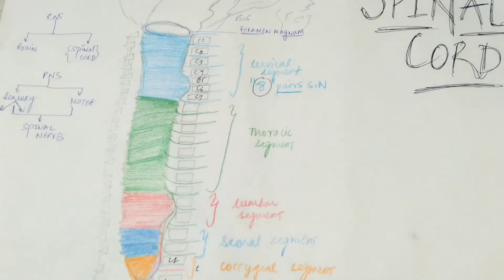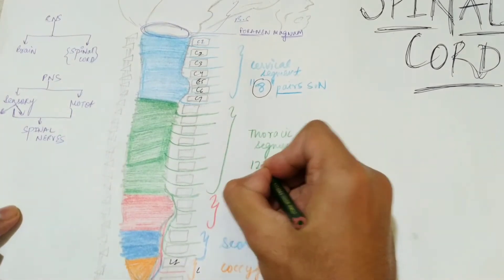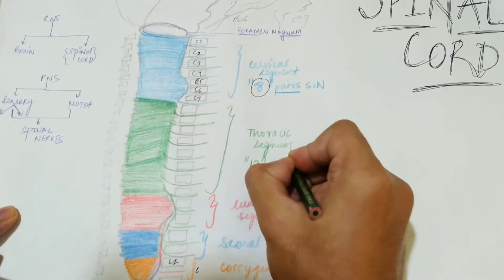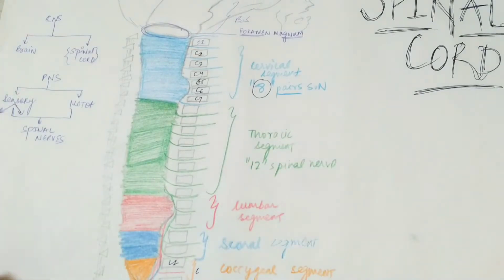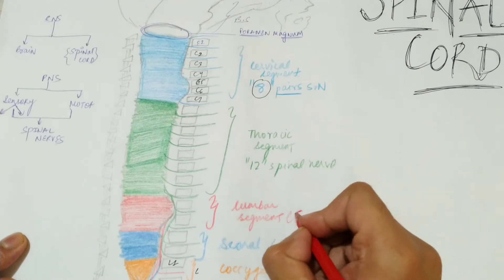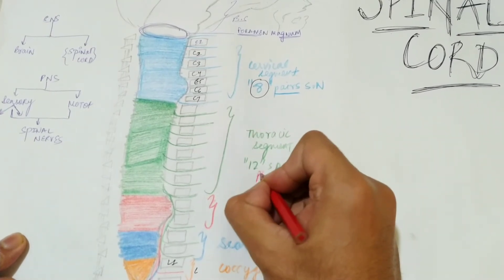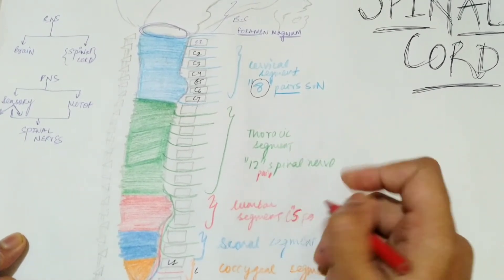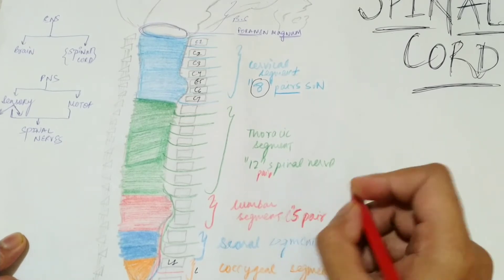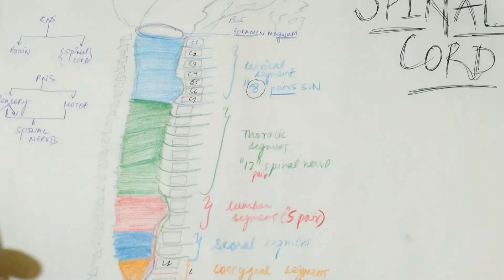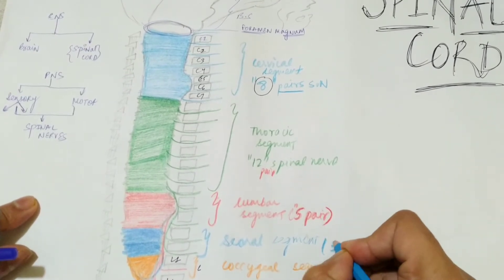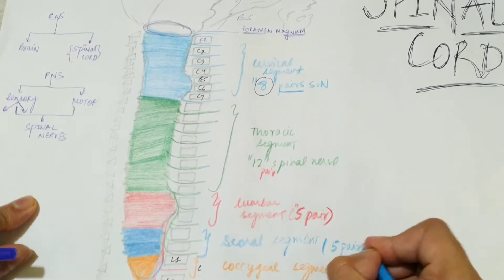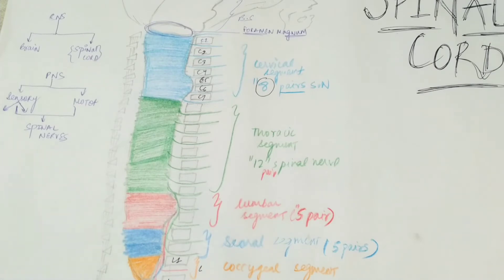In the thoracic segment, there are 12 vertebrae, so there are 12 pairs of spinal nerves. In the lumbar segment there are five pairs. In the sacral segment there are also five pairs. In the coccyx segment there is one pair.